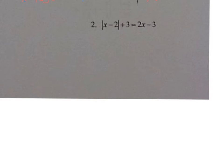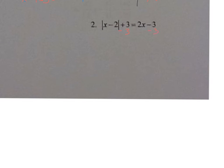For problem two, first check if the absolute value is isolated. On the left side of the equal sign, notice there is the absolute value and then a plus three. To get the absolute value by itself, subtract three from both sides. This gives the absolute value of x minus two equals two x minus six.